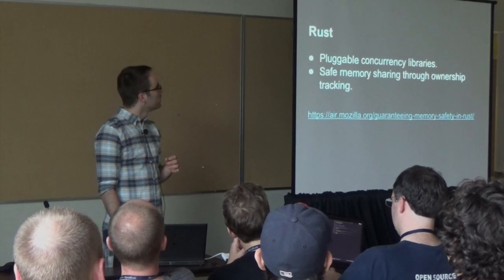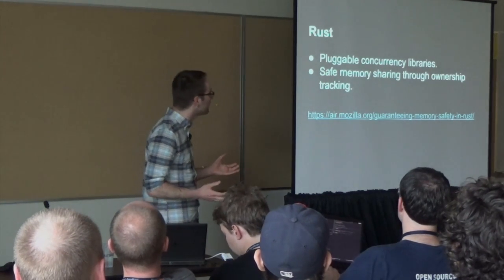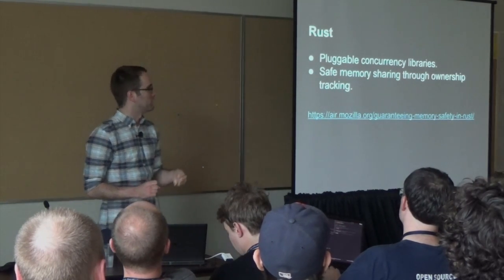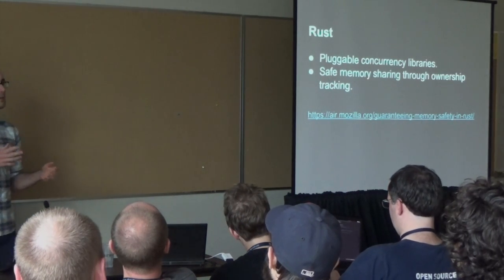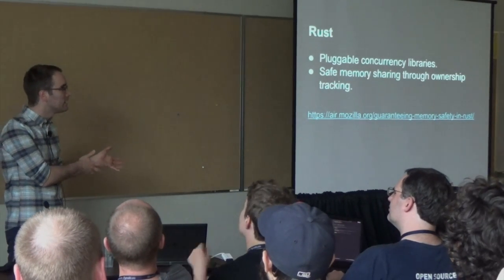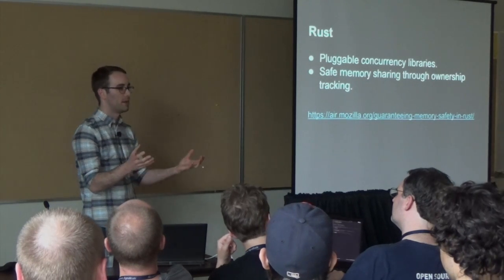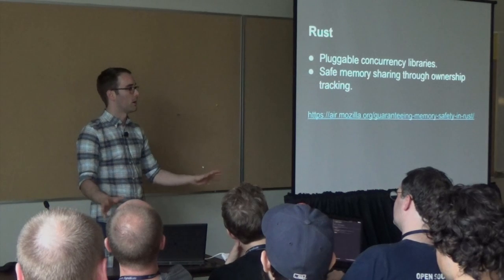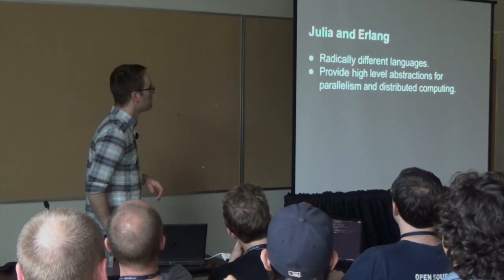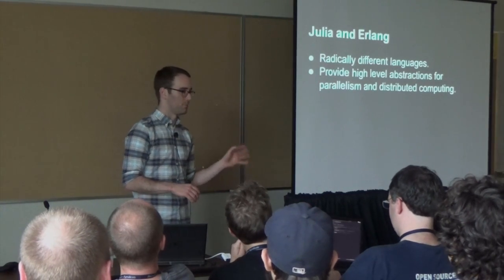Go, we've talked about plenty. Rust is super interesting — it offers pluggable concurrency libraries, and more importantly, safe memory sharing with ownership tracking. The compiler can prove when you're doing safe things in the language, which makes the whole program model totally safe — you don't have to worry about low-level synchronization if you can prove you're properly sharing memory. Julia and Erlang are immensely powerful languages for sophisticated parallelism and concurrency, letting you do distributed computing out of the box.